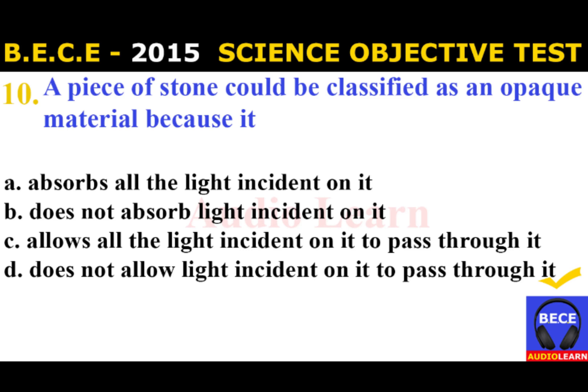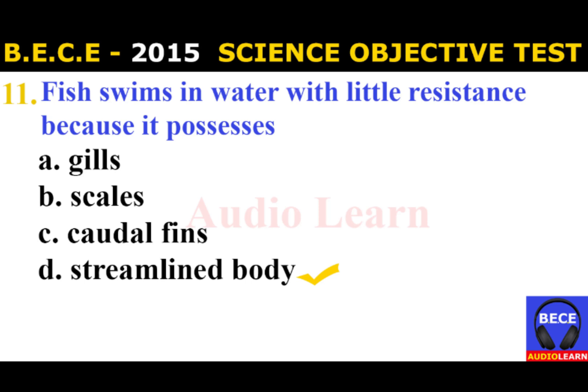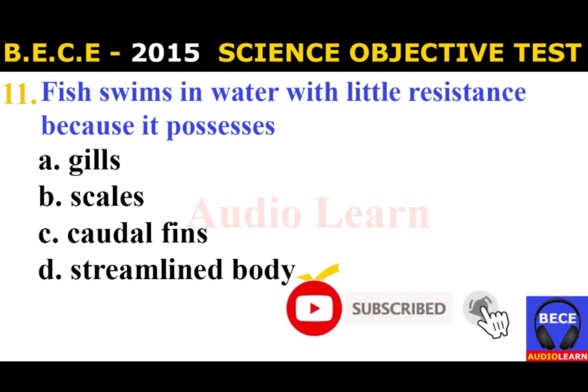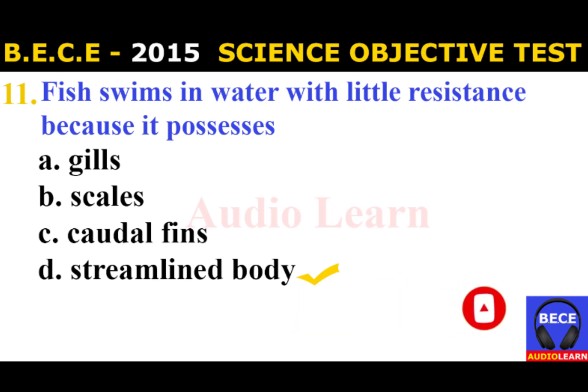Number 11: Fish swims in water with little resistance because it possesses A. Gills, B. Scales, C. Caudal fins, D. Streamlined body. The answer is D. Streamlined body. Fish swims in water with little resistance because it possesses a streamlined body.